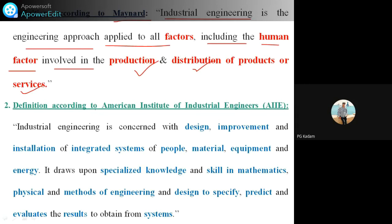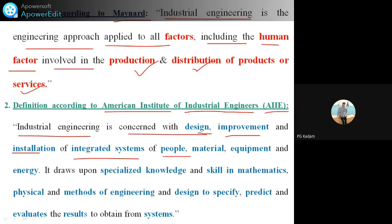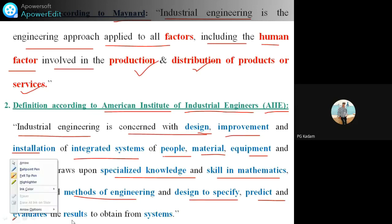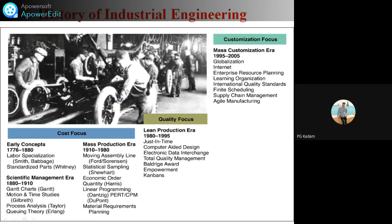According to the AIIE — the American Institute of Industrial Engineers — industrial engineering is concerned with the design, improvement, and installation of integrated systems of people, material, equipment, and energy. It draws upon specialized knowledge and skill in mathematics, physical sciences, and methods of engineering and design to specify, predict, and evaluate results obtained from such systems.